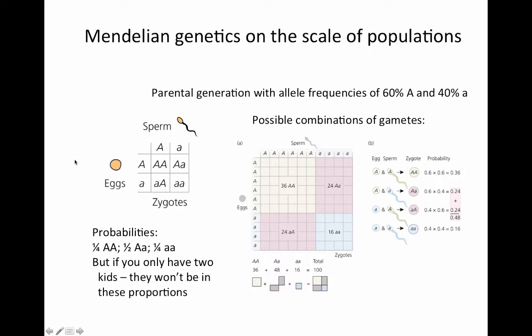But if these two parents only have two kids, they can't possibly be in those proportions. And even if they only had four kids, these are just probabilities — this is not deterministic. Each individual act of a sperm meeting an egg is a separate event with its own probability. So you've got a greater likelihood of getting a heterozygote, but you're not going to get them in exactly a one-to-two-to-one relationship.